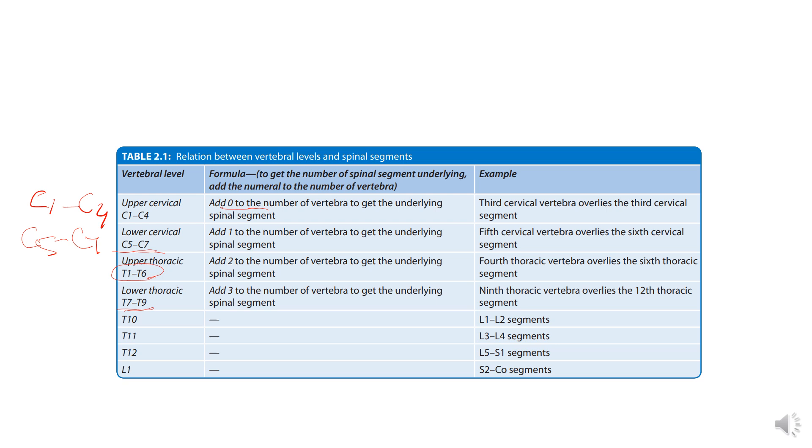Then at the level of T10 vertebrae lies the L1, L2 segments. T11, L3, L4. And T12, L5 to S1. And L1, at the level of L1 vertebrae lies the segments, sacral segments from second to coccyx segment.